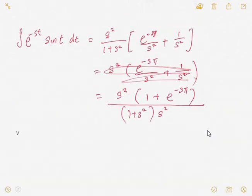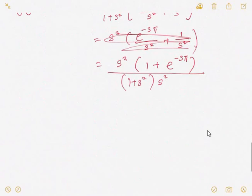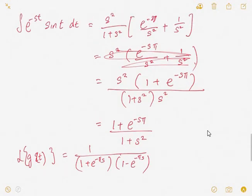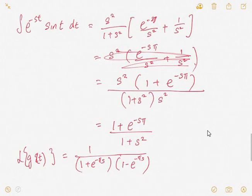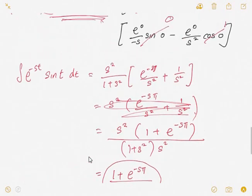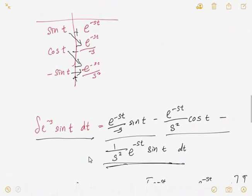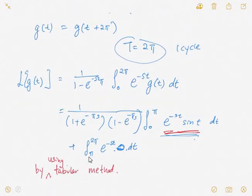So this is equivalent to (1 + e^(-sπ)) over (s(1 + s²)). The Laplace transform of g(t) is equal to 1 over (1 + s²) times (1 + e^(-πs)) over (1 - e^(-πs)). This is the answer for the integration of e^(-st) sin(t), referring back to the Laplace transform formula.